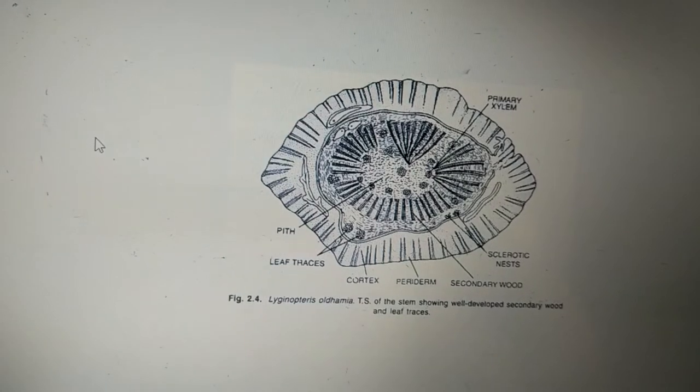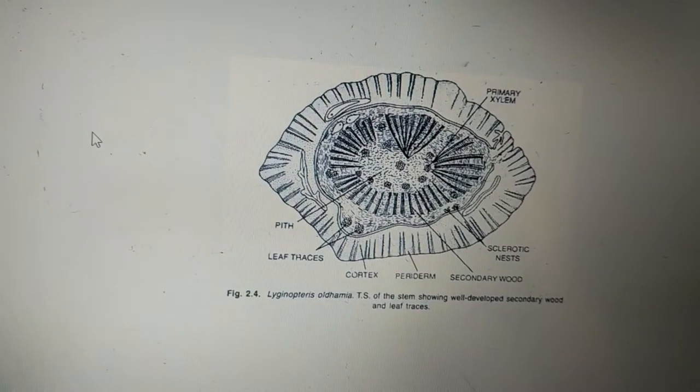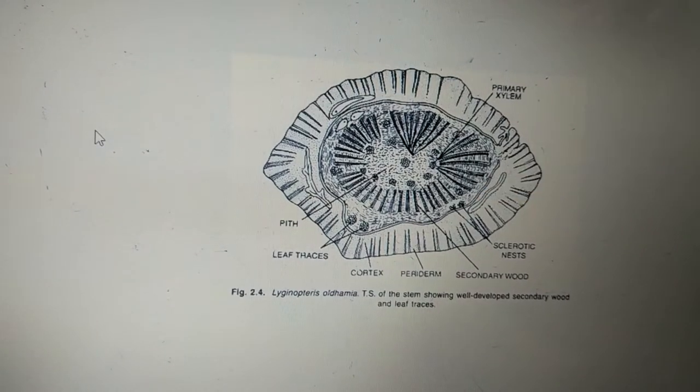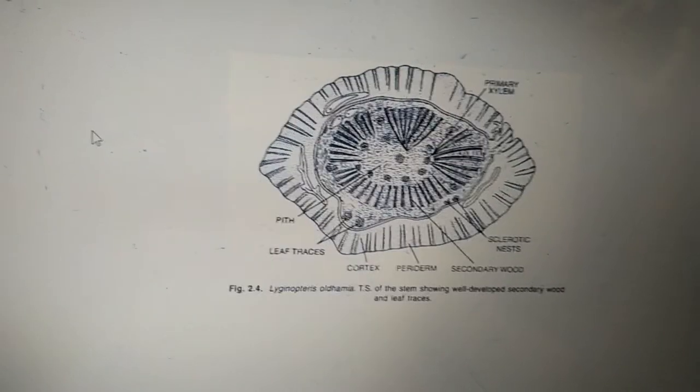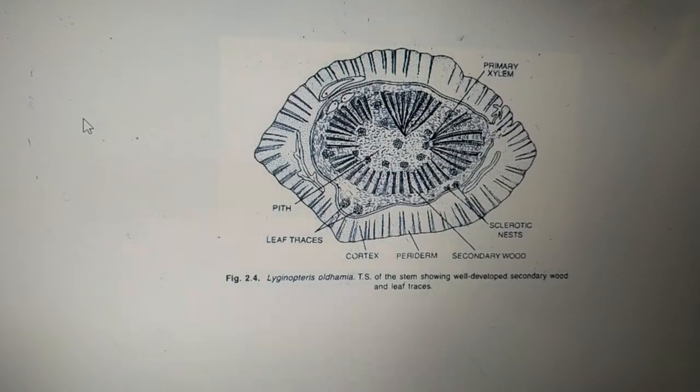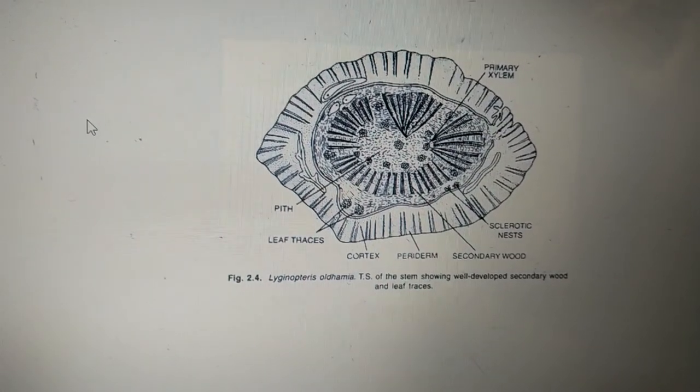Now what exactly are sclerotic nests? The name itself is saying these cells are usually made up of sclerenchymatous cells. Sclerenchymatous cells are nothing but thick-walled cells. The main function of them is to provide mechanical strength or support to this stem. This was a description regarding the anatomical features of a stem of Lyginopteris.